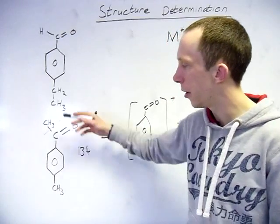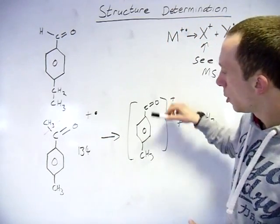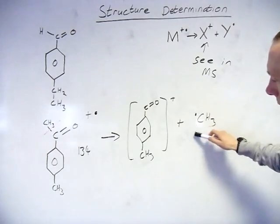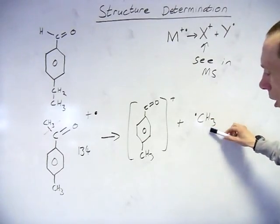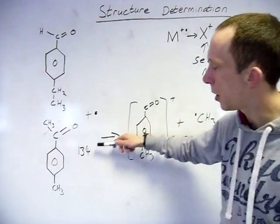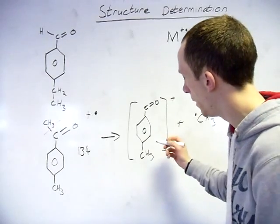So the molecular ion, in this case, 134. So what I would see here, since I've lost 15 there - 12 plus 3 - then I'm going to see a peak at 119.